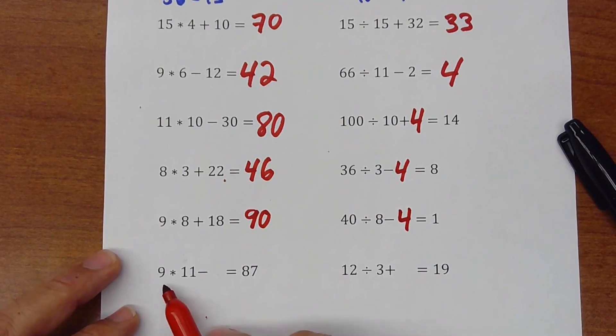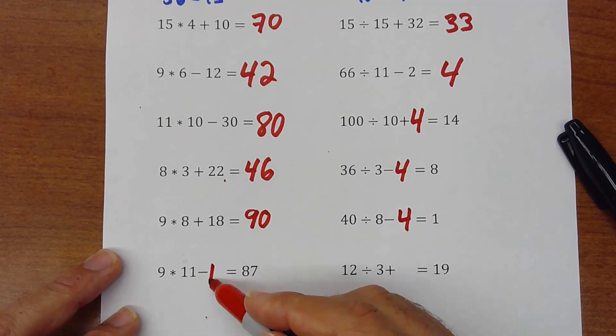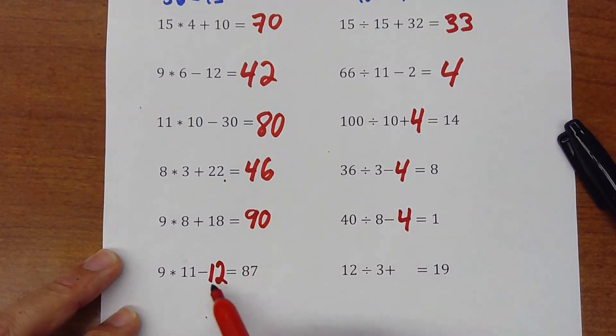And here we have 9 times 11 is 99, minus something is 87. So that would be a 12, because 99 minus 12 it will give me the 87.